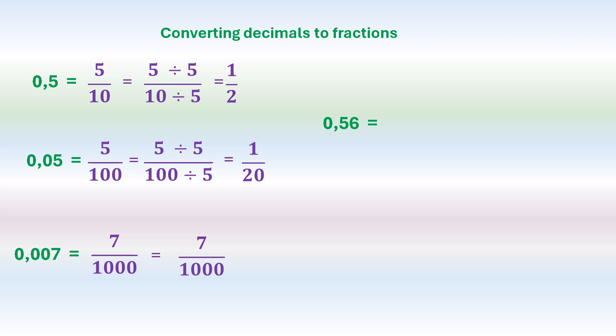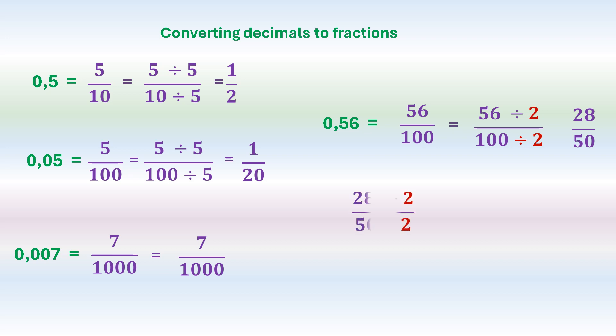For 0.56: there are two digits after the comma, so the denominator is 100 and the numerator is 56, giving 56 over 100. We can simplify — both are even, so we divide by 2 to get 28 over 50. We can simplify again by dividing by 2: 28 divided by 2 is 14 and 50 divided by 2 is 25. We can't simplify 14 over 25 further, so that is our final answer.